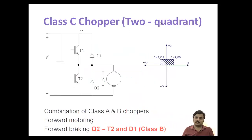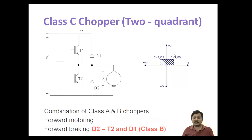Now coming to class C chopper — it is a two-quadrant chopper. The class C chopper consists of two switches (two thyristors or SCRs) and two diodes. T1 and T2 are the controlled switching devices, and D1 and D2 are the uncontrolled diodes. Class C chopper operates in two quadrants: quadrant 1 and quadrant 2. It is a combination of class A and class B choppers connected in parallel.